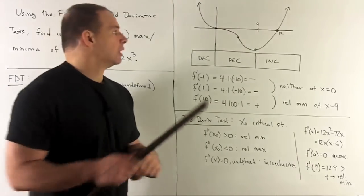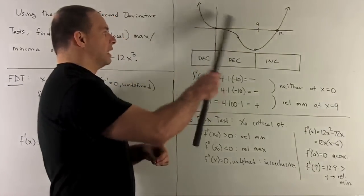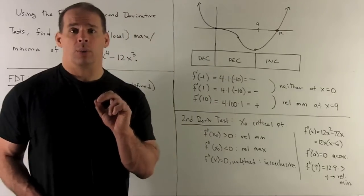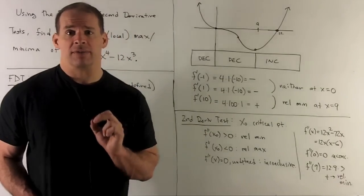We check the graph. Here, we can't say anything. Here, we have a relative minimum. So, at least in the point where we get an answer, second derivative test checks out.